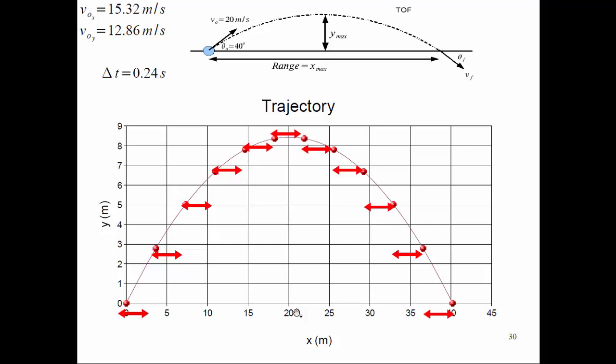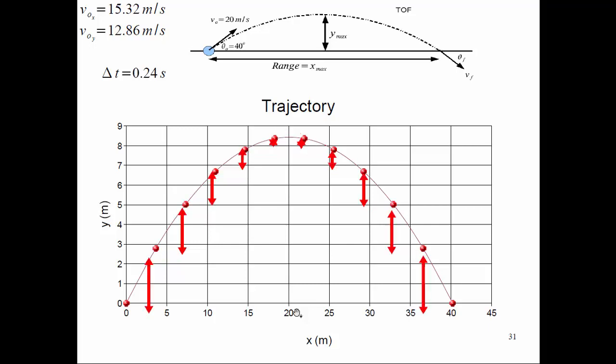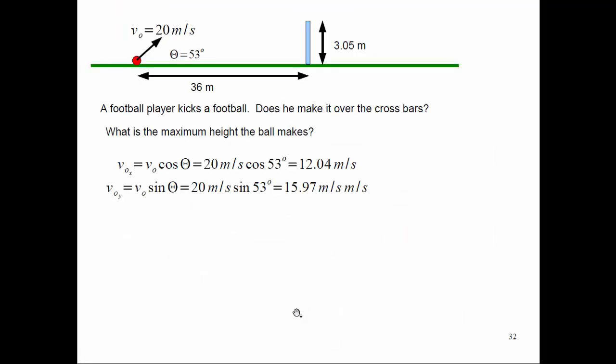The X velocity is constant, so the distance it travels in the X direction is constant. It's accelerating in the Y direction at minus 9.8 meters per second squared, or minus G. Now let's look at a new problem — we're going to kick a football and see if it makes it over the crossbars.